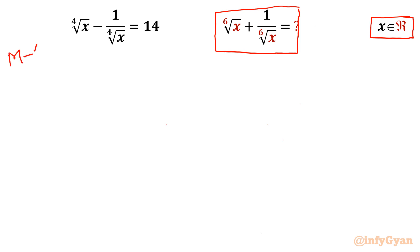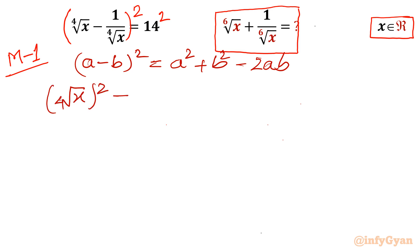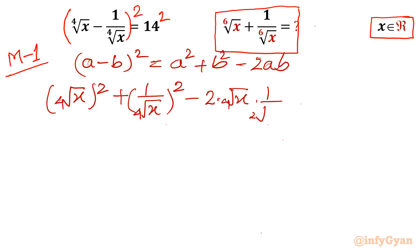Method number 1. I will begin by squaring both sides of the equation. Expanding using the identity (a minus b) whole squared, which is a squared plus b squared minus 2ab. On the left-hand side I write: 4th root of x whole squared plus 1 over 4th root of x whole squared minus 2 times 4th root of x times 1 over 4th root of x, and 14 squared is 196.